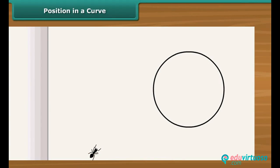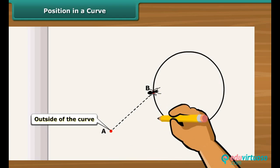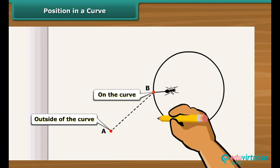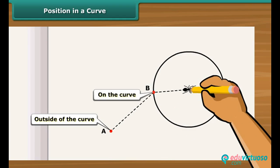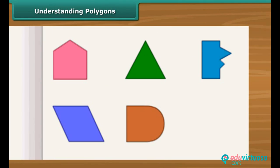Here you see a moving ant. With reference to a closed curve, at position A the ant is at exterior or outside of the curve. At position B, it is on the boundary or on the curve. At position C, the ant is at interior or inside of the curve. These figures displayed on screen are closed curves.